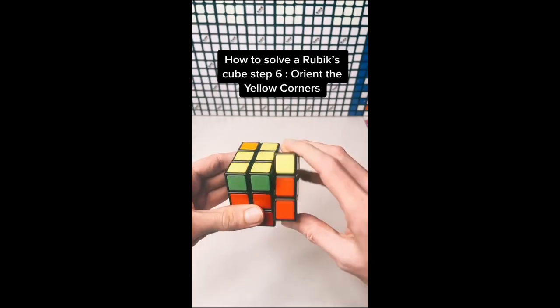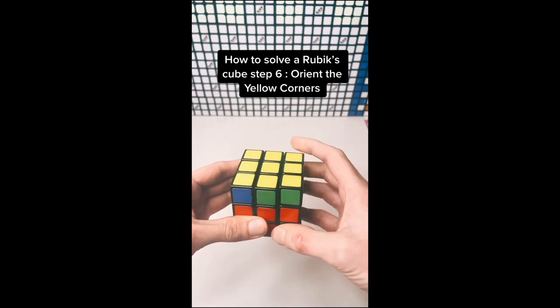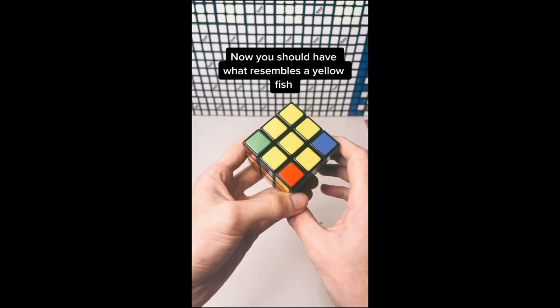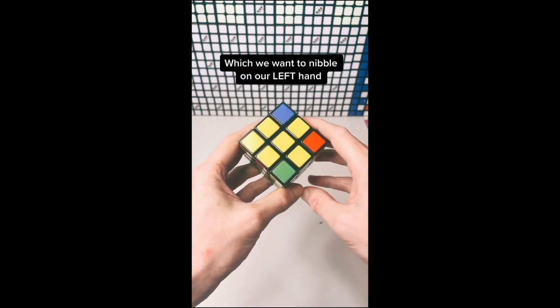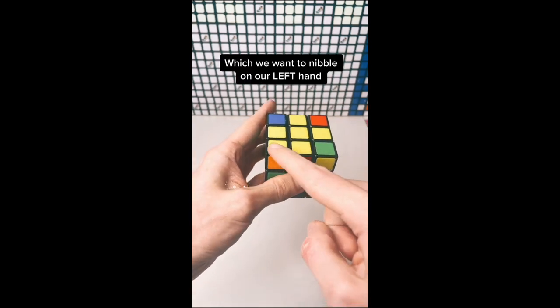How to solve a Rubik's Cube step 6: Orient the yellow corners. Now you should have what resembles a yellow fish, which we want to nibble on our left hand.